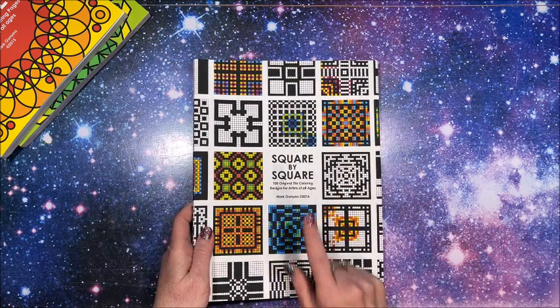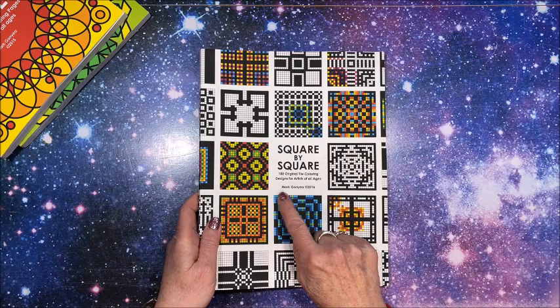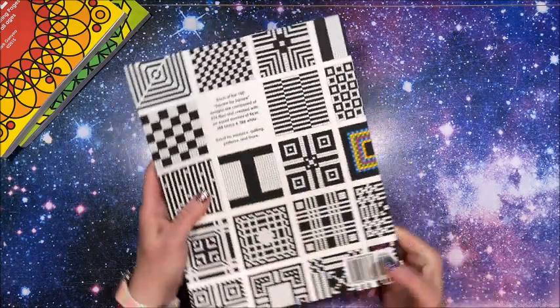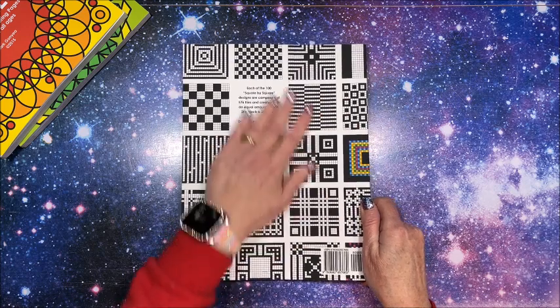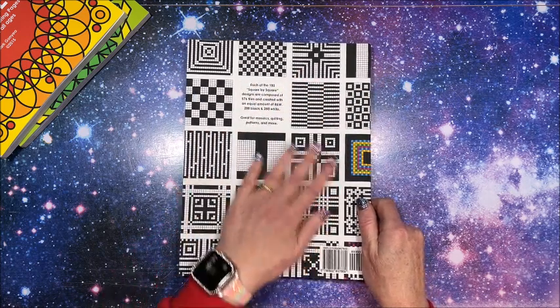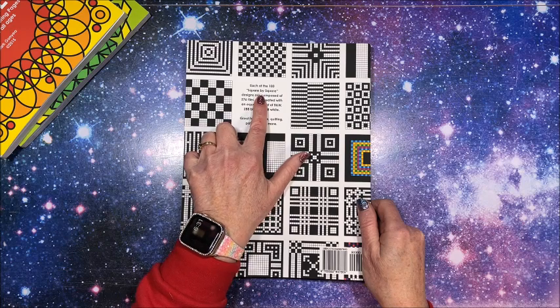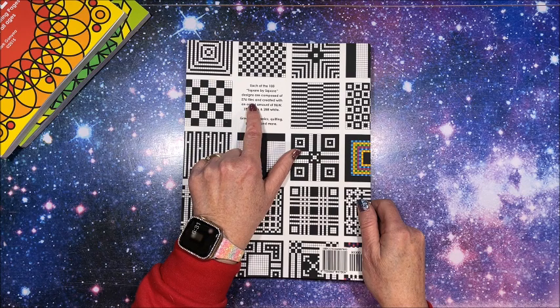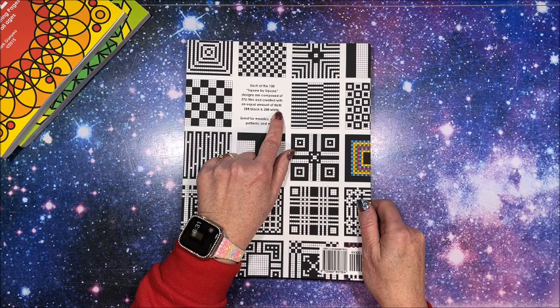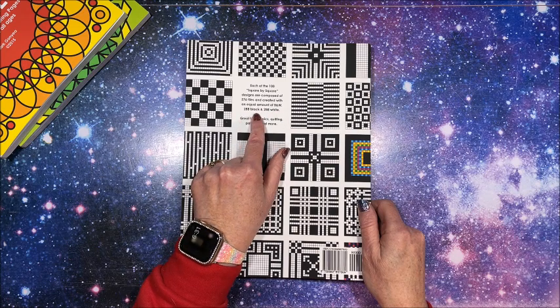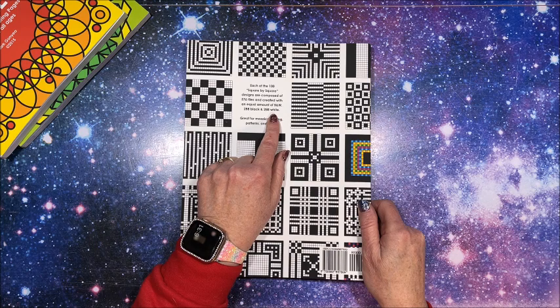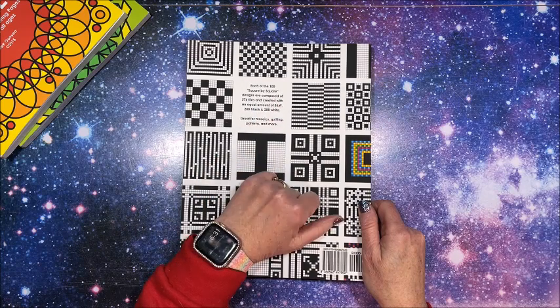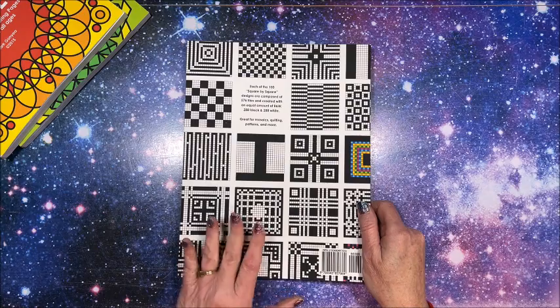Square by Square: 100 Original Tile Coloring Designs for Artists of All Ages. This is the front cover. This is the one that intrigued me, then I looked up his name and I saw these other two books. This is the back cover, again that matte, real soft cover. Each of the 100 Square by Square designs are composed of 576 tiles and created with an equal amount of black and white—288 black and 288 white.